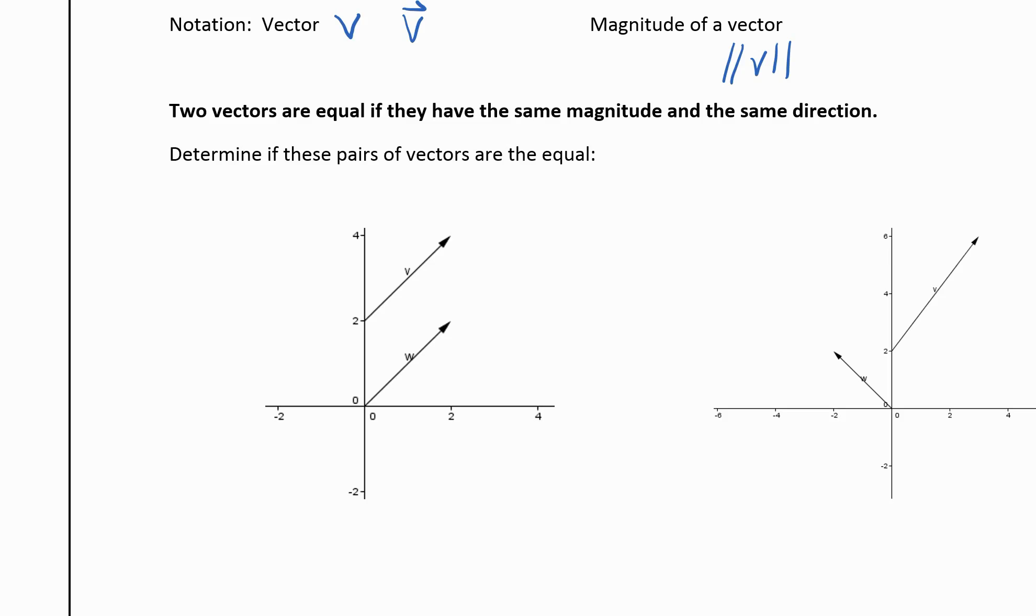Now when we're putting vectors on a coordinate axis, you don't always have to start them at the origin for them to be equal. The only two things that you need for two vectors to be equal to each other is for them to have the same magnitude and the same direction. So they don't necessarily need to be in exactly the same spot.